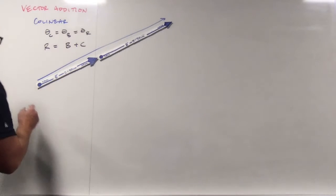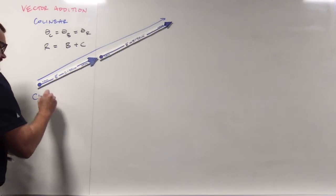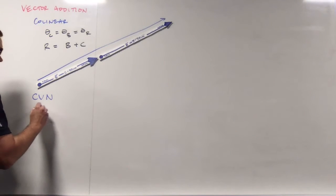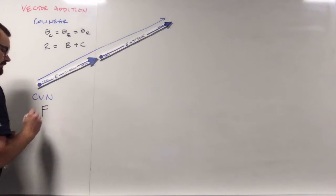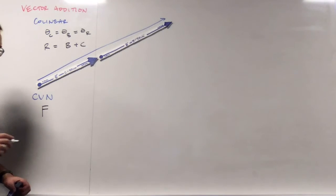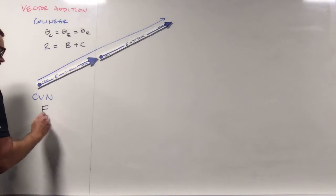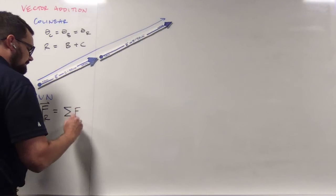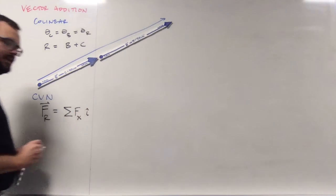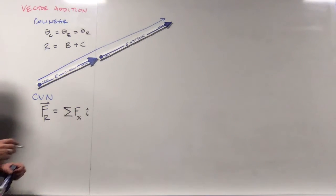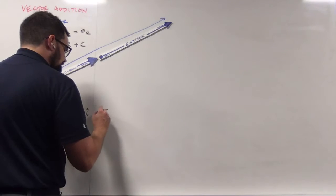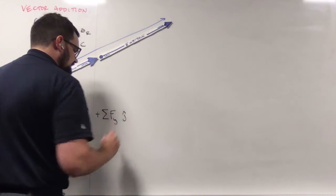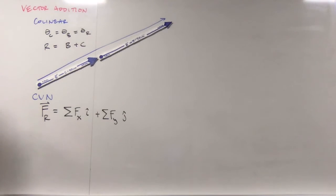So if we were writing this in Cartesian vector notation, and by the way, we're going to start using the idea of a capital F to indicate force, push or pull, because that's what we're interested in in statics. Our resultant force is going to be equal to the sum of all the x components that point in the unit vector i, or the x direction, plus the sum of all the y components that point in the j direction.